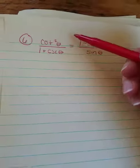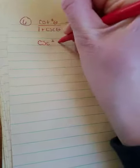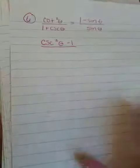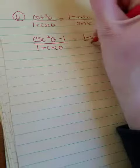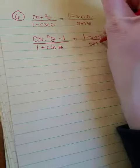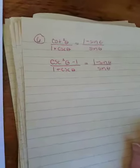So I'm going to use one of my identities: cotangent squared of theta equals cosecant squared of theta minus 1. Okay, and nothing has happened in the denominator. My right-hand side is going to stay the same.